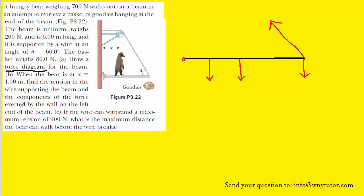It asks us in part B to find the components of the force exerted by the wall on the left end of the beam. So the wall is actually exerting forces over here, and it turns out that these forces are acting this way and also upward.